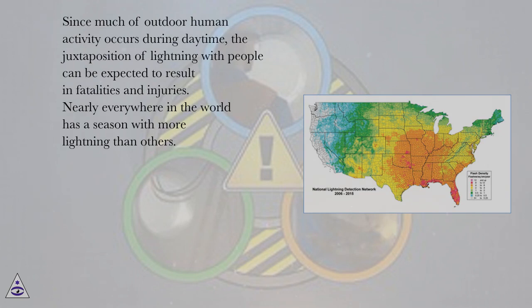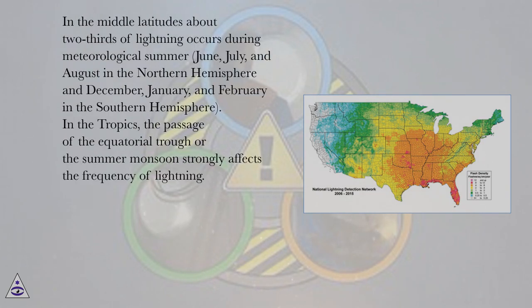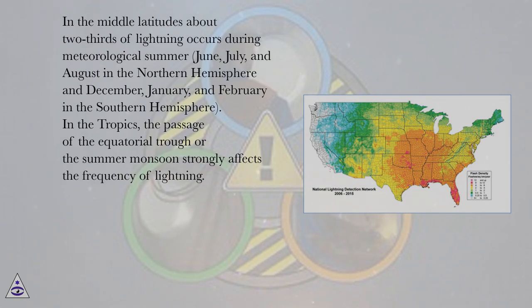Nearly everywhere in the world has a season with more lightning than others. In the middle latitudes, about two-thirds of lightning occurs during meteorological summer — June, July, and August in the northern hemisphere, and December, January, and February in the southern hemisphere.